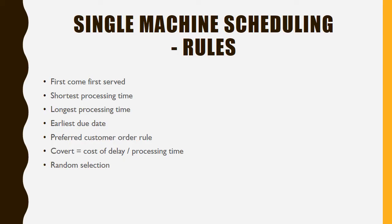The third rule is Longest Processing Time, which is the exact opposite of Shortest Processing Time. Among the customers, the job with the maximum processing time is scheduled first to be processed, and the job with the shortest processing time is processed last.